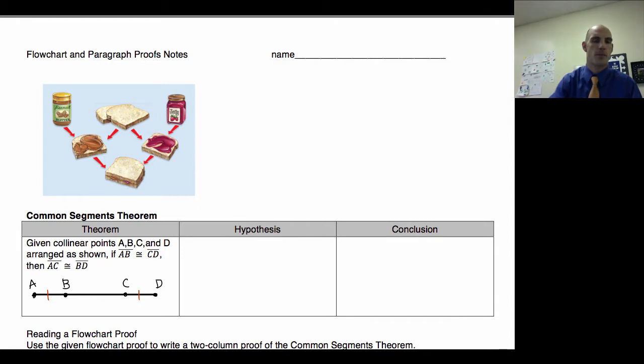A good visual for this comes from this peanut butter and jelly diagram. You're going to notice a couple of things. Obviously, peanut butter and jelly and geometry might not have that much to do with each other, but the flowchart proof is a lot like this. What you're going to notice is the peanut butter, the bread, and the jelly are all the elements, all the components that we're putting together. So these are going to be like our statements.